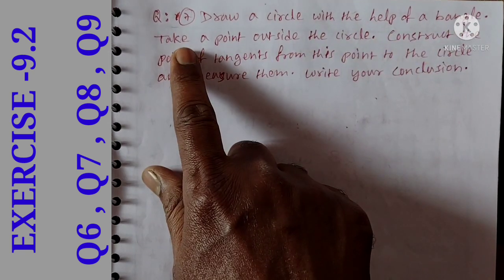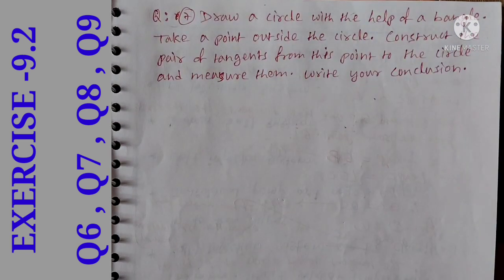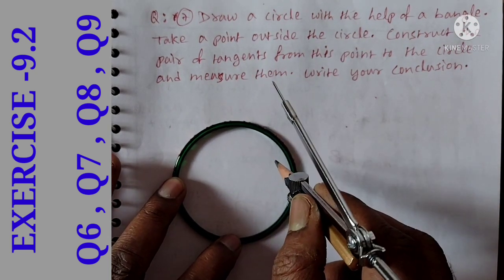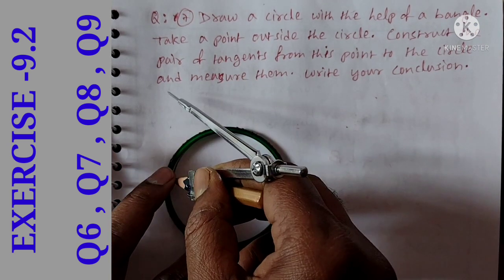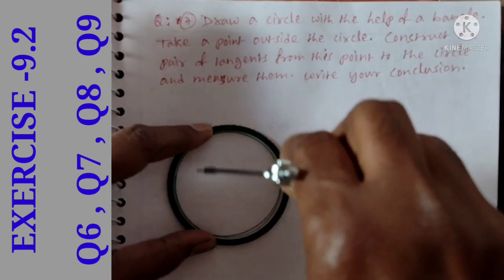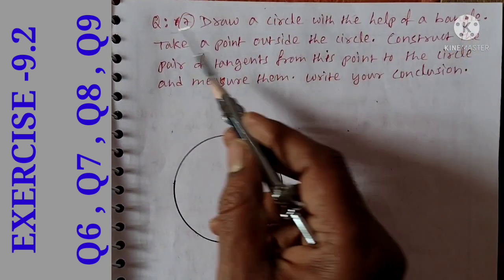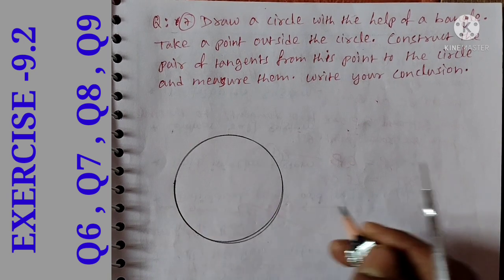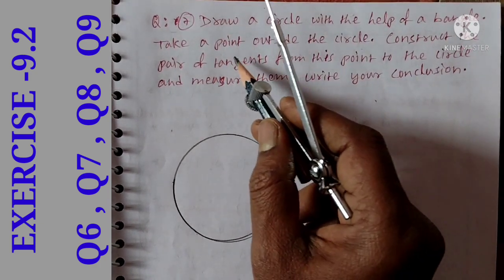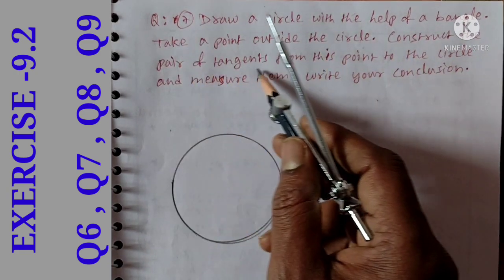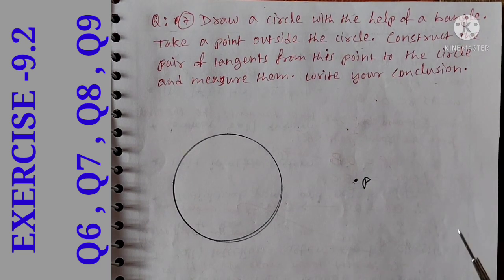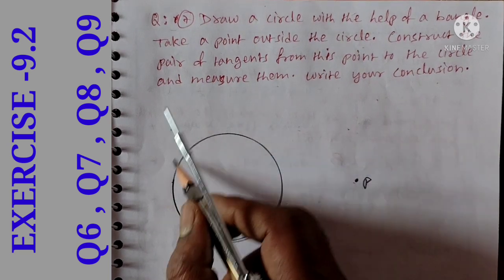Draw a circle with the help of a bangle. Take a point outside the circle. Draw a circle with the bangle and take a point P outside the circle. Construct the pair of tangents from this point to the circle and measure them. You can draw the tangents and write your conclusion.